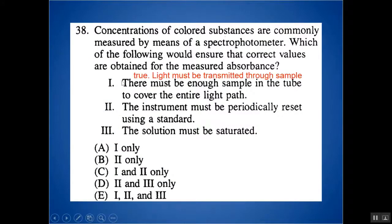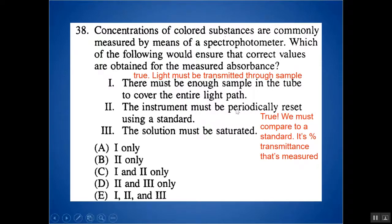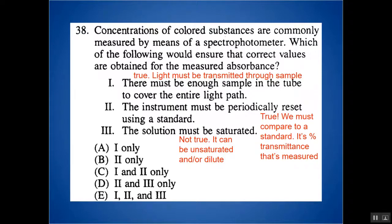In the lab, there must be enough sample in the tube to make sure the entire light path is covered — fill tubes at least three-quarters of the way. If you don't have enough solution, the light might pass through an empty test tube rather than the solution. You also want to periodically calibrate your machine using a standard, as described before. The solutions do not have to be saturated — they can be unsaturated, concentrated, or dilute. You're figuring out the concentration based on the absorbance.